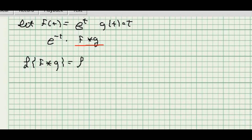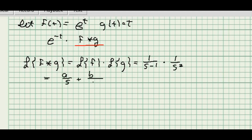From the convolution theorem, the Laplace transform of f star g is just the Laplace transform of f times the Laplace transform of g. The Laplace transform of an exponential e to the t is 1 over s minus 1, and the Laplace transform of t is 1 over s squared, so I get this expression.